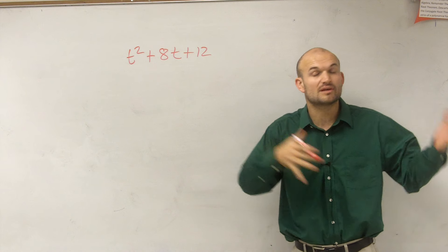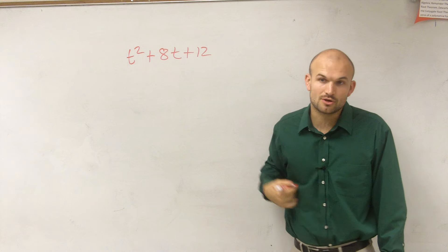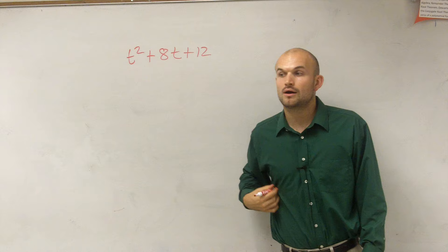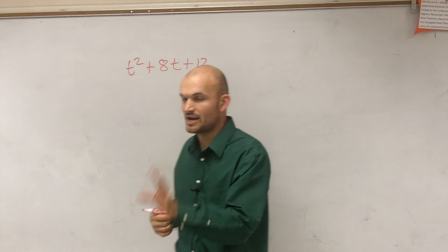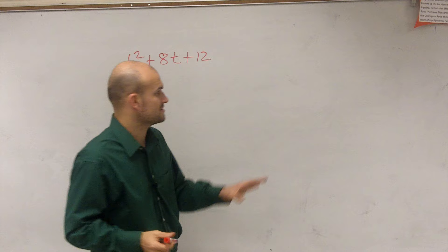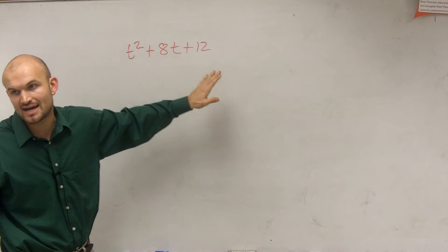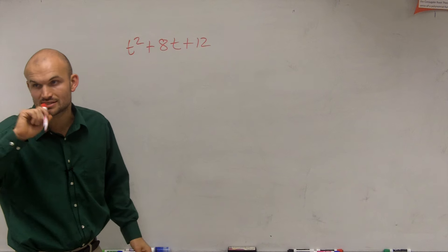You always want to look if you can pull out a GCF. In this problem, we don't have a GCF. So, well, we can still factor it, right? Because factoring just means writing it as a product of its factors. So what is a number that divides into this?